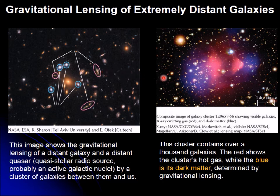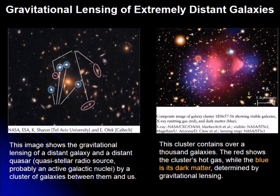Here is a case where the location of dark matter was obtained by means of lensing — by looking at the image, identifying replicated objects, and extracting the possible distribution of dark matter that would produce that image. In this case, the blue represents dark matter and the red is just gas in between, in this region that has over a thousand galaxies.